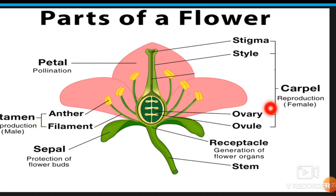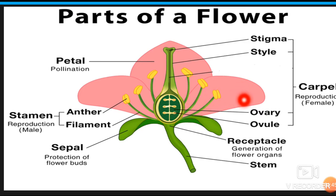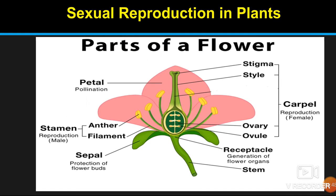The essential parts are carpel and stamen. In the carpel, stigma, style, ovary, and ovule are present. In the stamen, anther and filament are present. The non-essential parts are sepals and petals. Petals are responsible for attracting insects when pollination is carried out by insects.